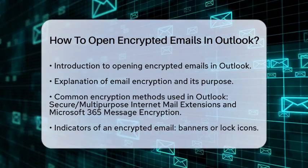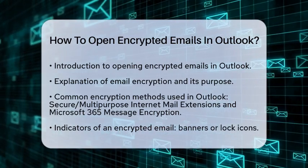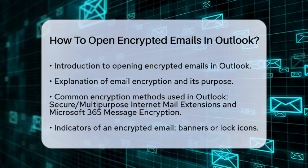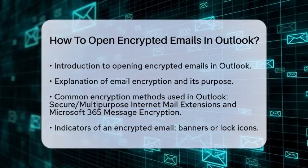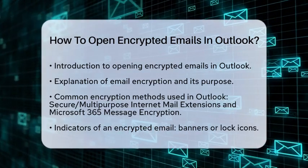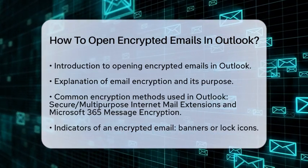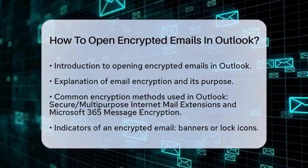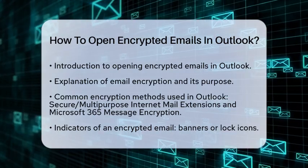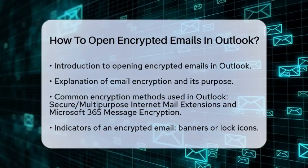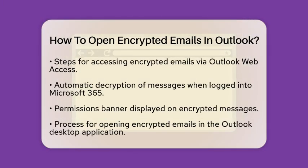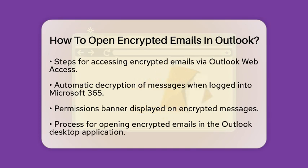In Outlook, common encryption methods include Secure Multipurpose Internet Mail Extensions and Microsoft 365 Message Encryption. When you receive an encrypted email, it will usually indicate that the message is protected. You might see a banner or a lock icon, depending on the encryption method.